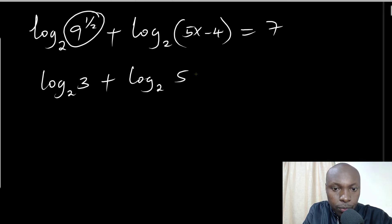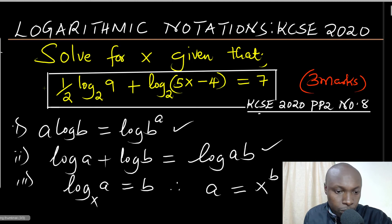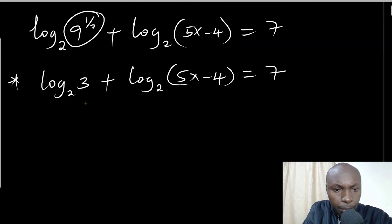Equals 7. At this stage we're going to use law number two: log a + log b = log(ab). So applying that, we get log₂[3(5x-4)].